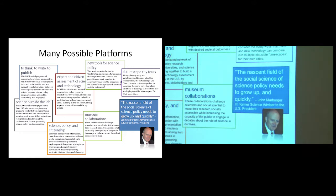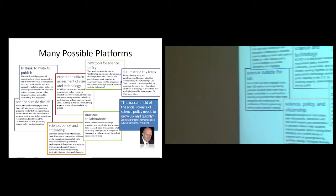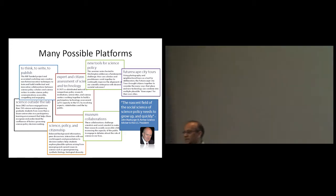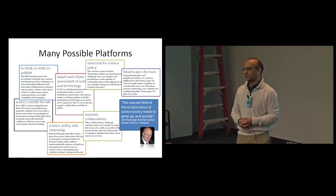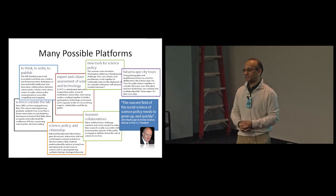Anyway, there's a lot of options, but it's basically a call that John Barber made in the early 2000s that the social science of science policy needs to grow up and grow up quickly. And we're trying to help that by creating this platform, by combining research and practice and a lot of agony to have this kind of pilot and experimentation. Thank you.